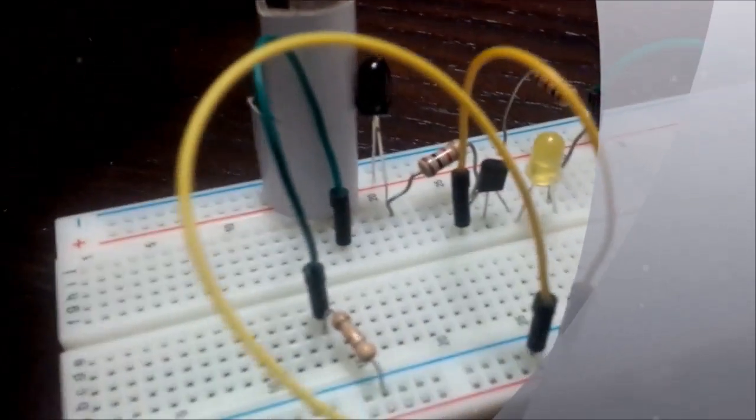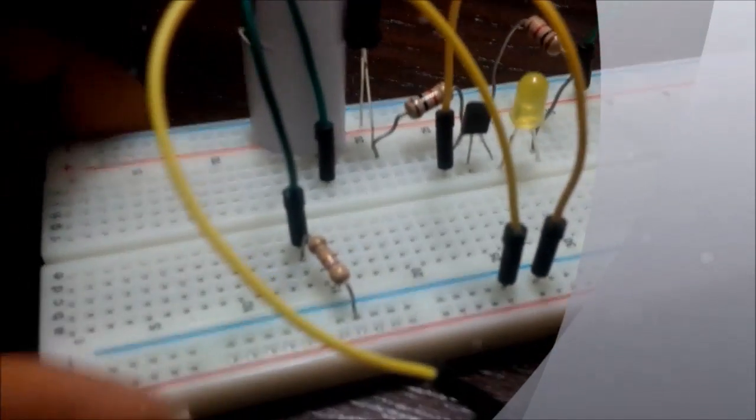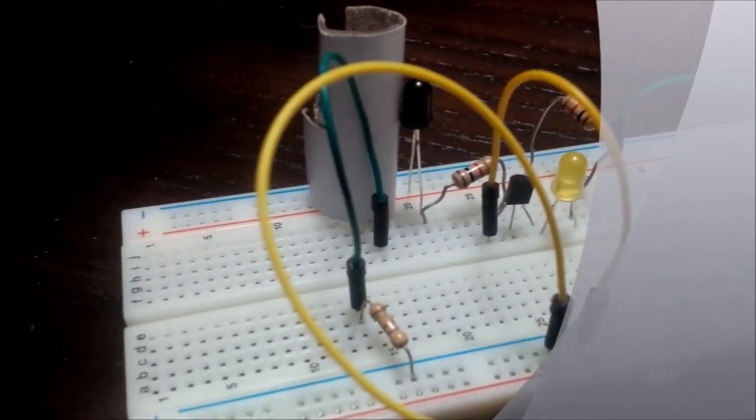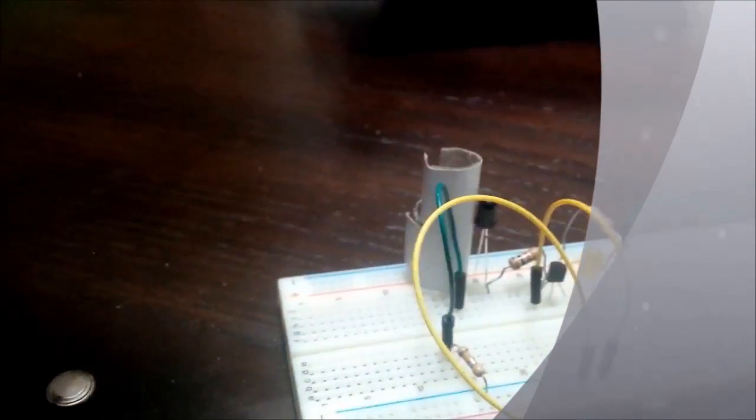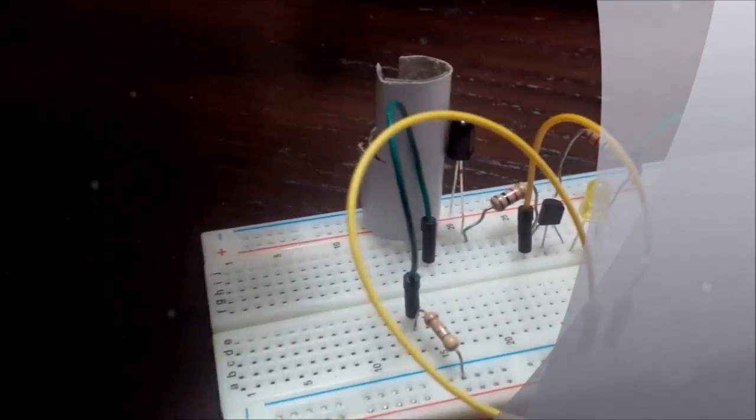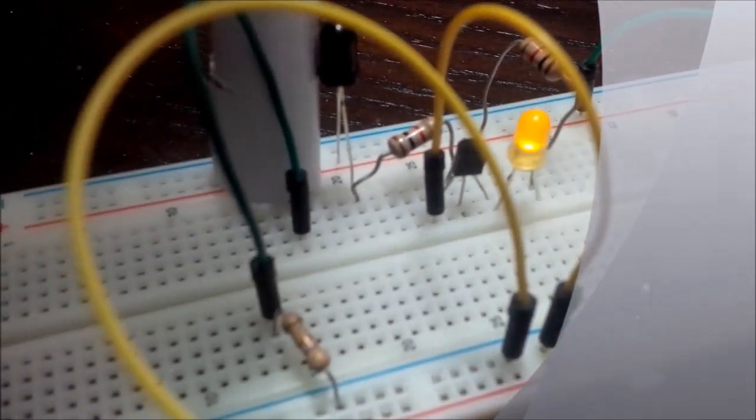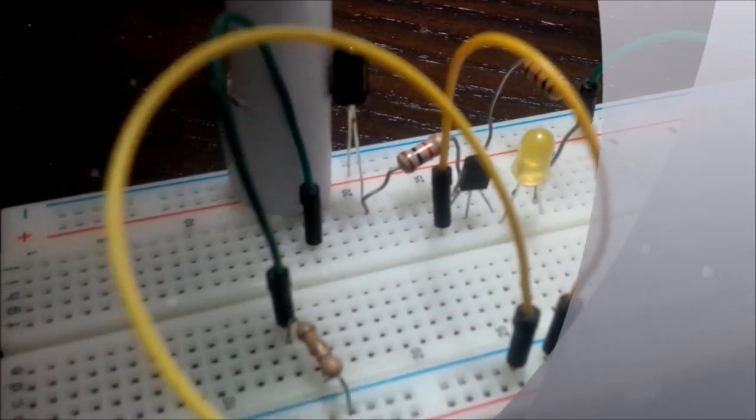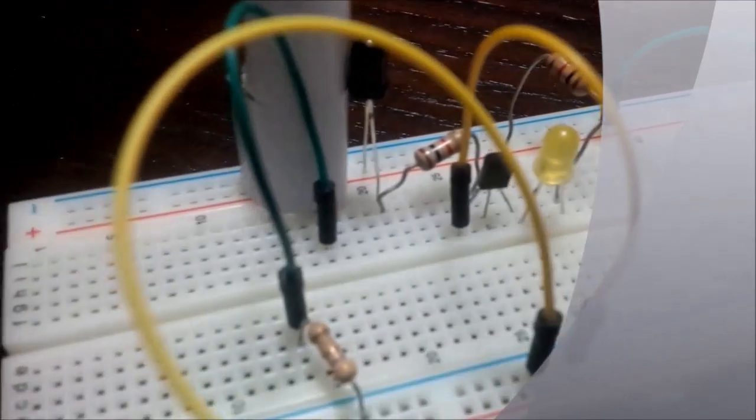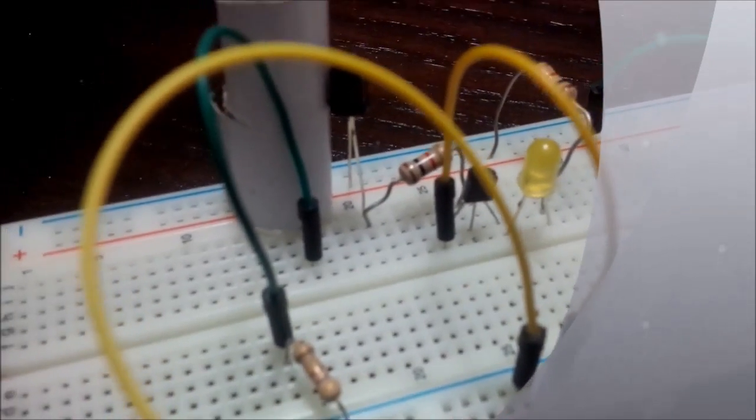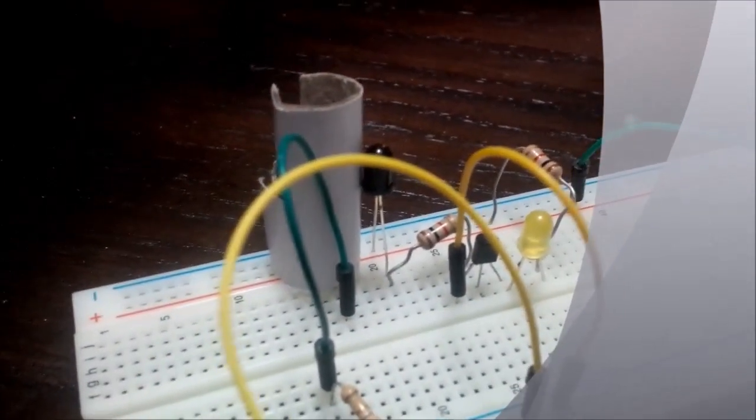However, if you use an ordinary remote control and you point it towards the receiver and you press it, the LED will come on as you see the blinking. So you can actually make a remote control receiver in your house and use your universal remote control to control other things in your house.